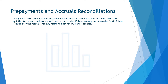We will now discuss prepayments and accruals reconciliations. Once bank reconciliations are complete, prepayments and accruals reconciliations should be completed soon after. These two balance sheet accounts will determine if there are any amounts to be charged to the profit and loss for the month. Entries here may relate to both revenue and expenses.